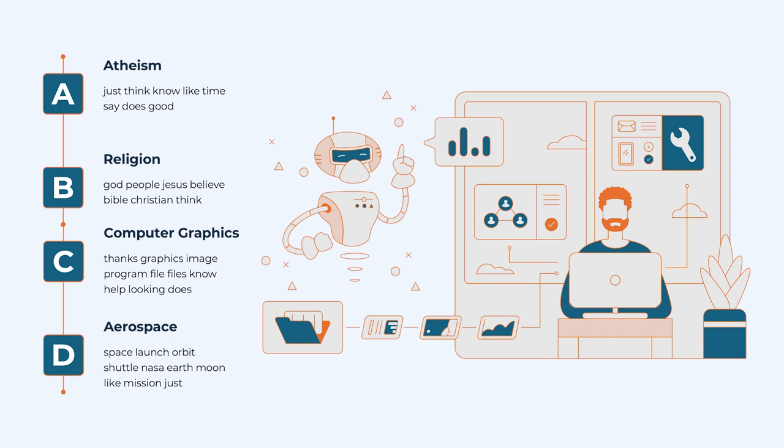After defining the clusters, we can identify the cluster centers, which provide intuition for the most influential words in each cluster. In cluster 1, Atheism, we have words such as just, think, time, and good. In cluster 2, Religion, we have God, People, Jesus, Bible, Christian, Think, and Religion. In cluster 3, Computer Graphics, we have words like Graphics, Image, Program, Files, Help, Looking, and Does.